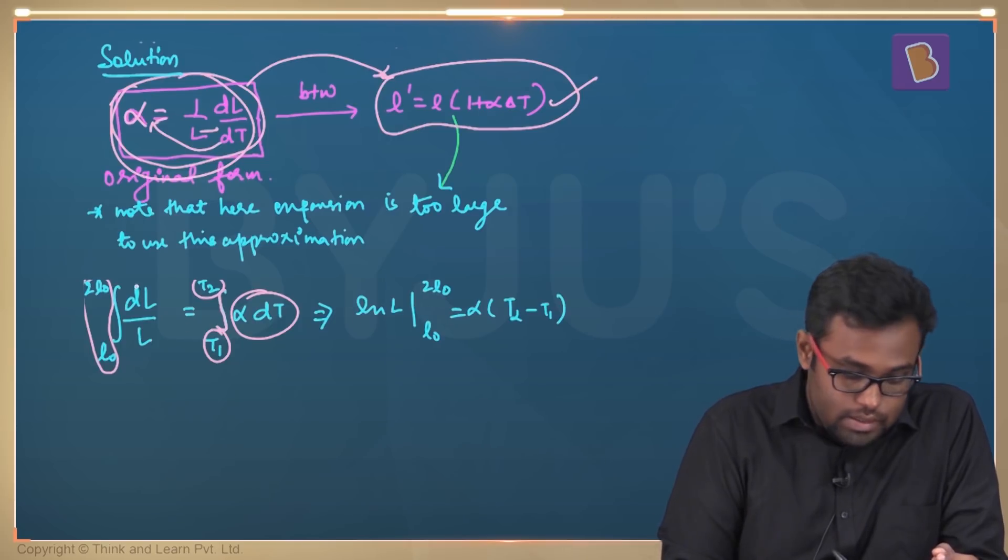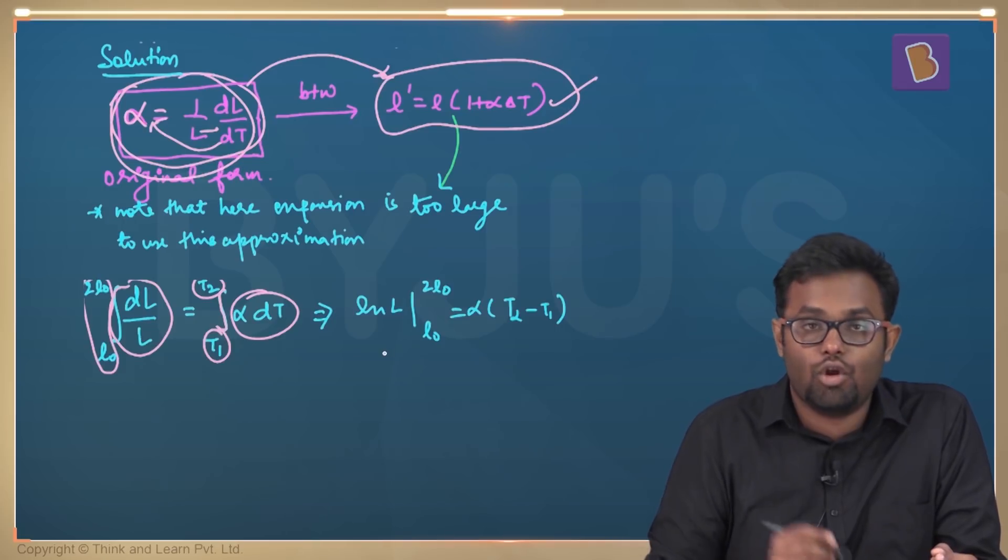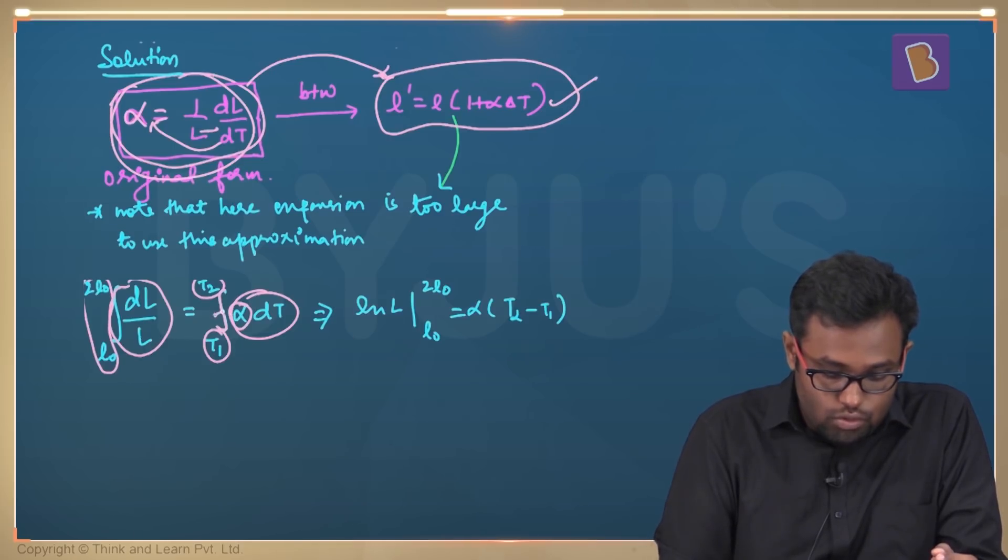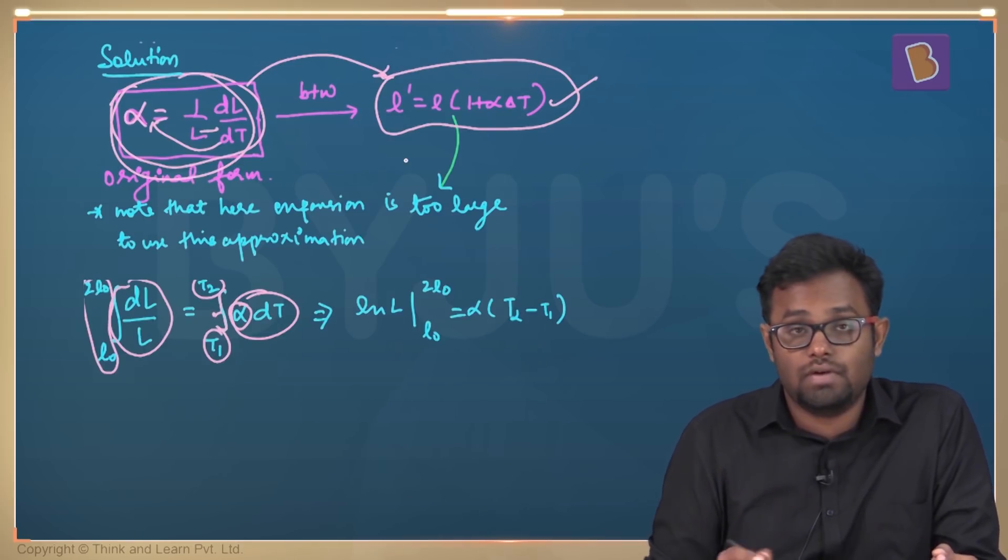Now the integration of DL by L will become LNL, like log to the base E, from L0 to 2L0. And that becomes equal to alpha is a constant, so it comes out of the integration. It has been told in the problem that alpha doesn't change. So alpha comes out. You get T2 minus T1.